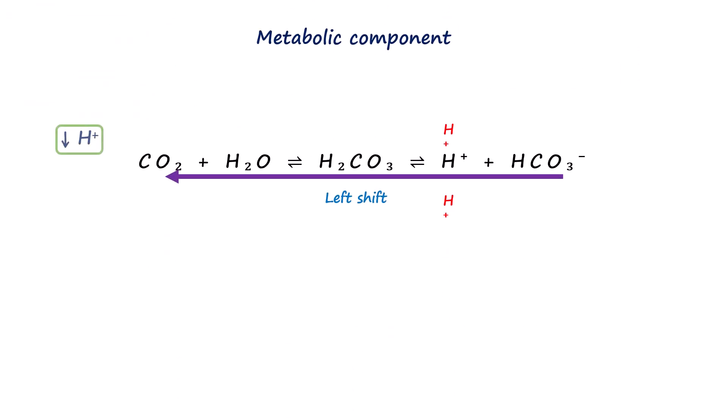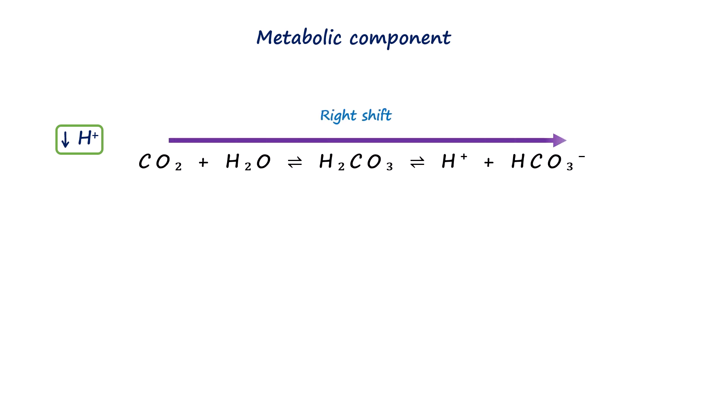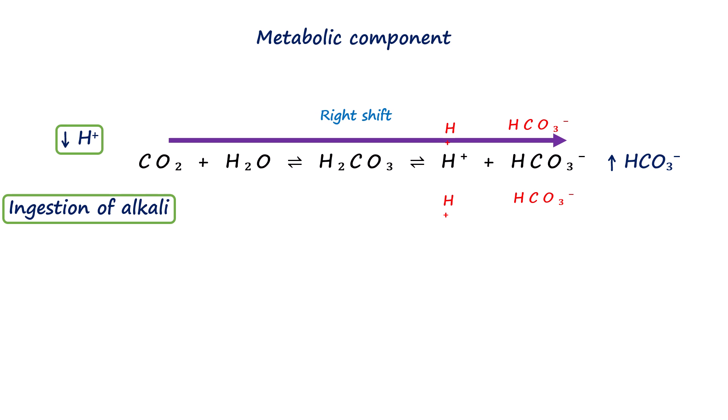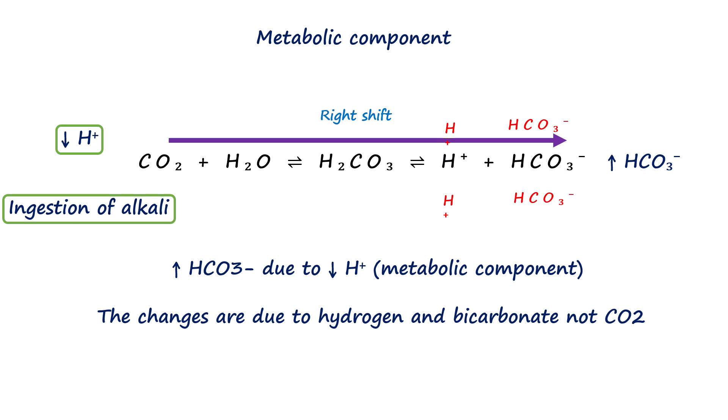When hydrogen is lost, as in metabolic alkalosis, the reaction shifts right to replace the lost hydrogen ions. This shift releases more hydrogen into the blood to help restore normal pH. But because the equation always releases hydrogen together with bicarb, it also increases bicarbonate level, which is why bicarbonate level rises in metabolic alkalosis. And as simple logic as it is, adding alkali adds to the concentration of bicarbonate and the system again shifts right to generate hydrogen to neutralize it. So in both metabolic acidosis and alkalosis, the cause can be pinpointed to the metabolic component of the reaction.